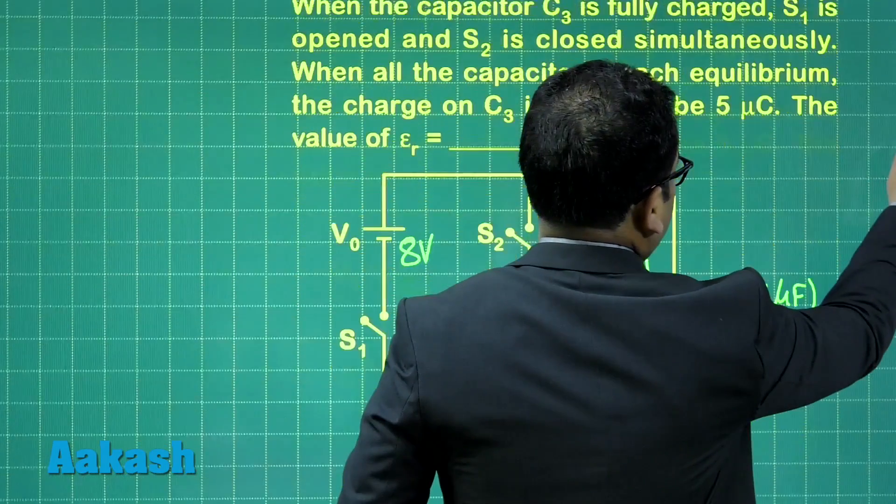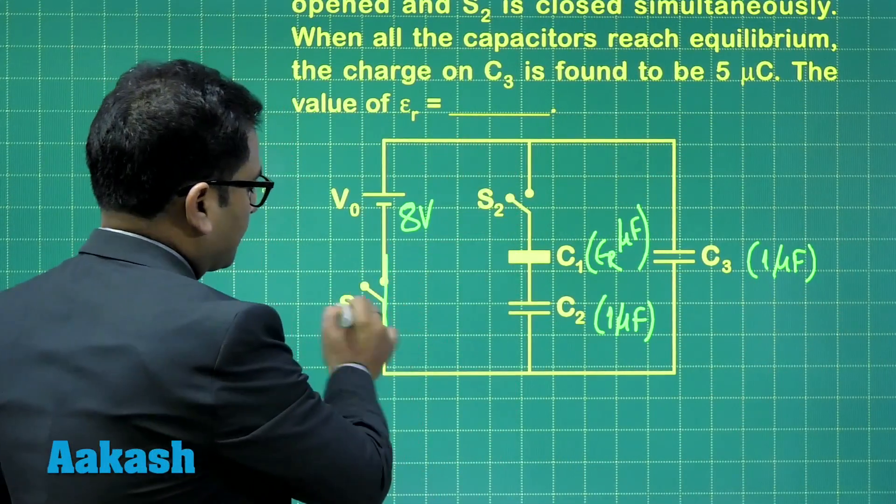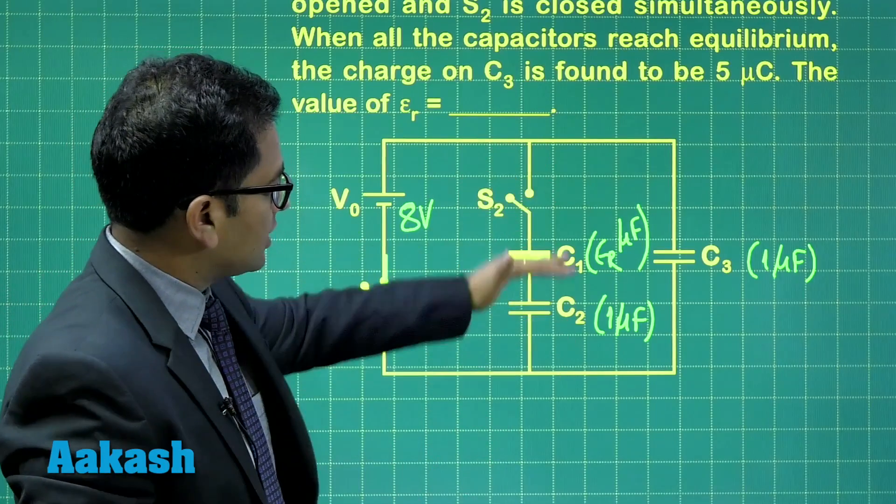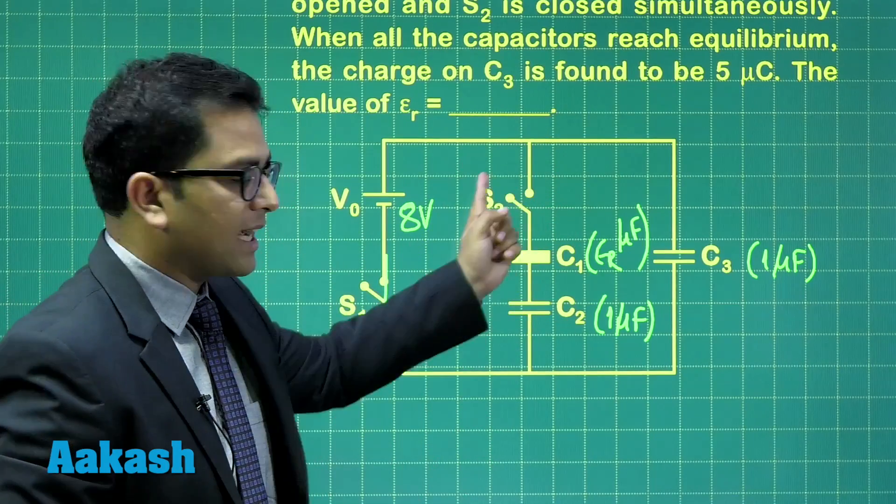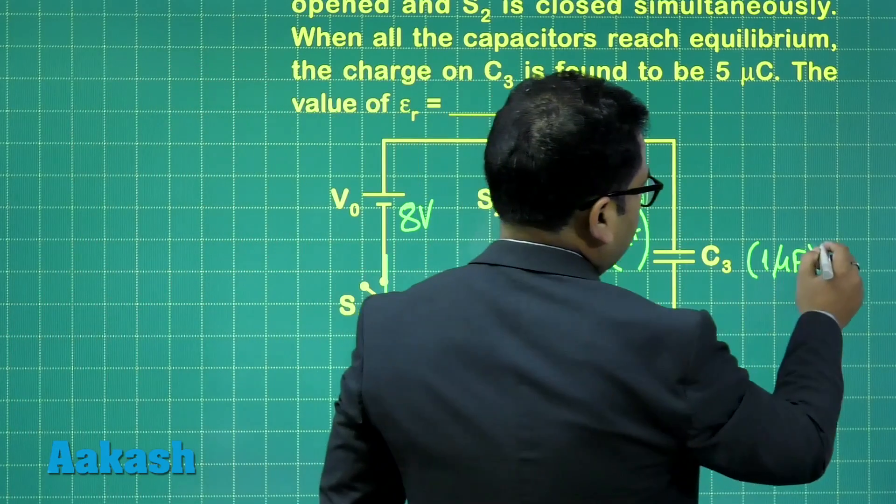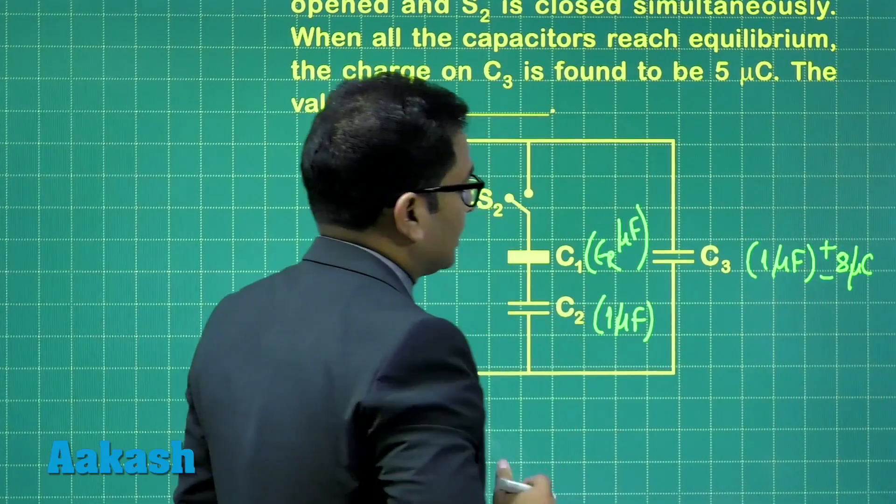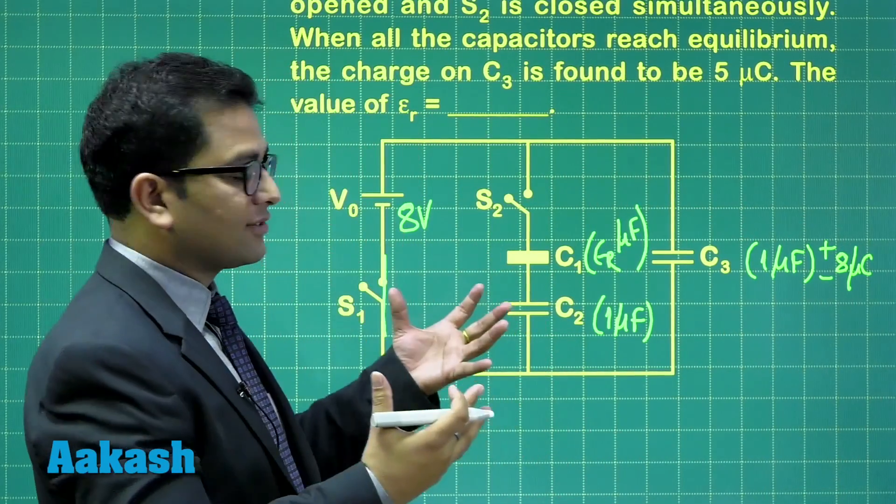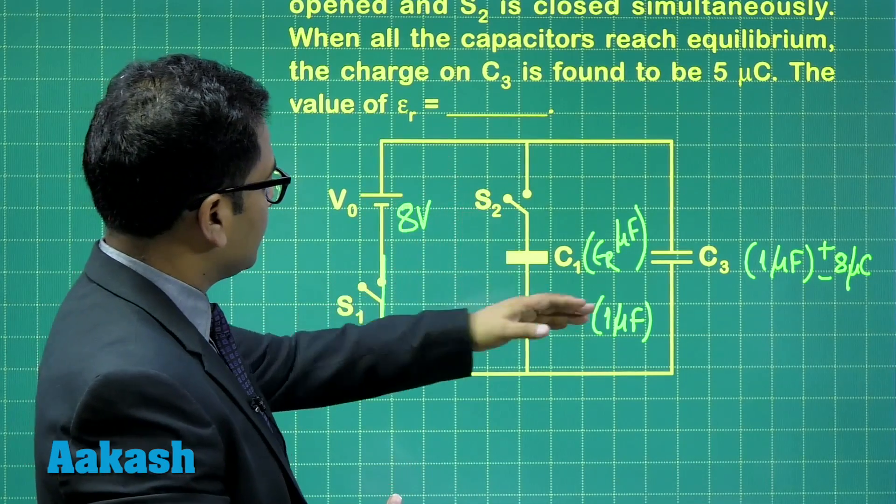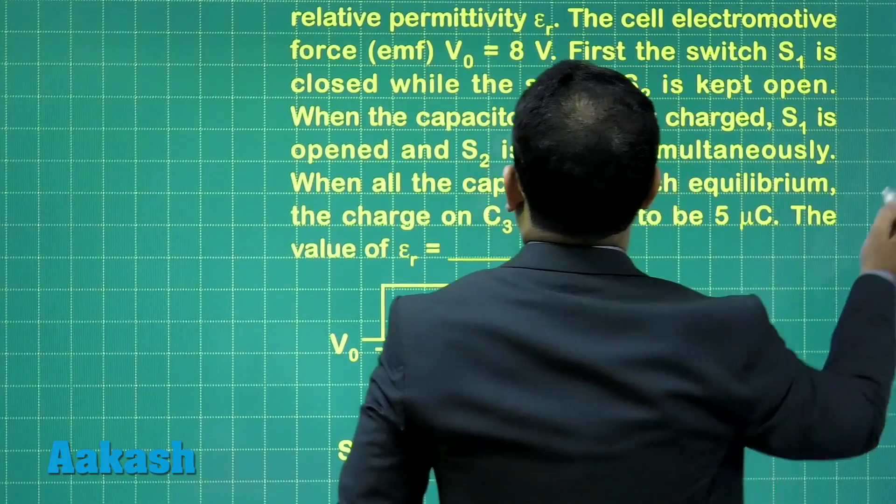First, S1 is closed and S2 is kept open. That means when S1 is closed, this is not going to get affected because this branch is handicapped here. So entire 8 volt will appear here in the form, and that will be 8 microcoulomb would be the initial charge at C3 at the time when S2 is open and this is closed. Now, what is the additional change after that?